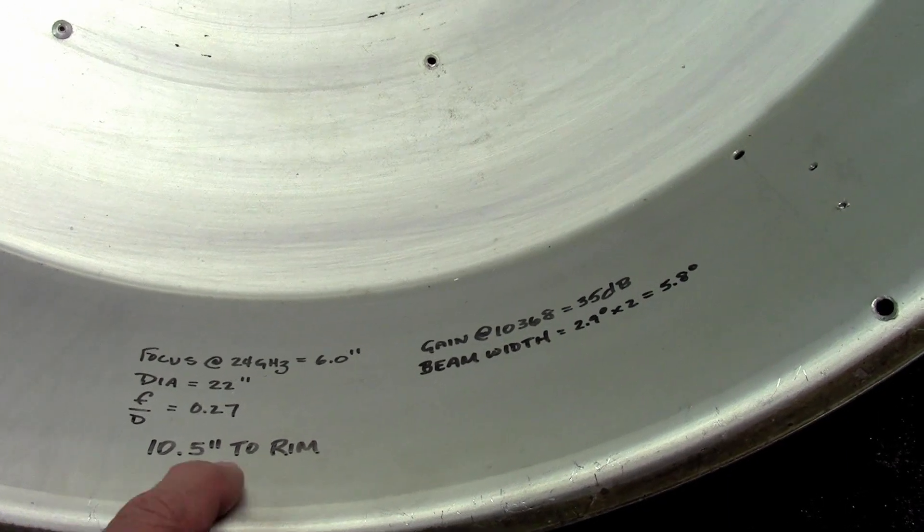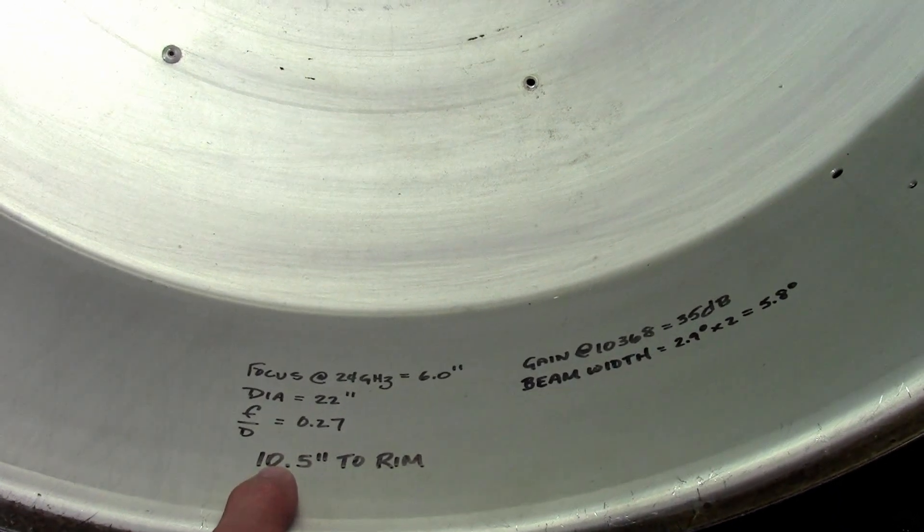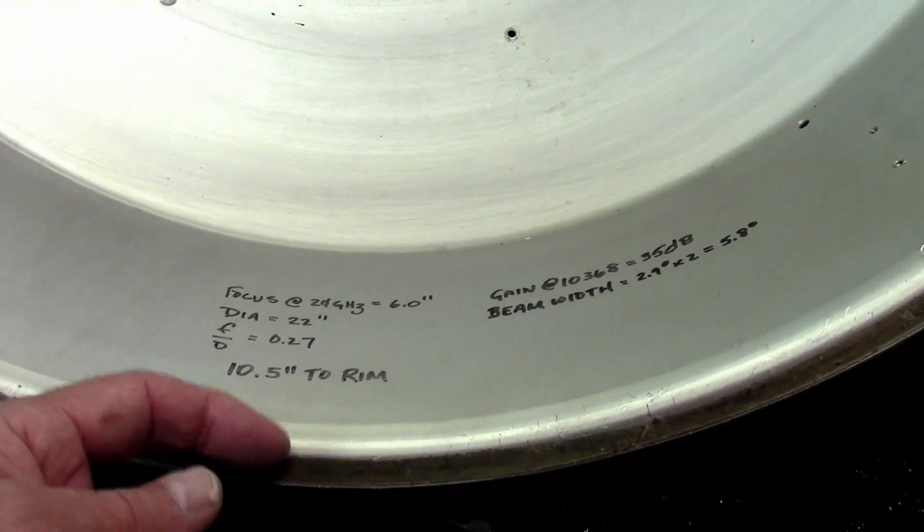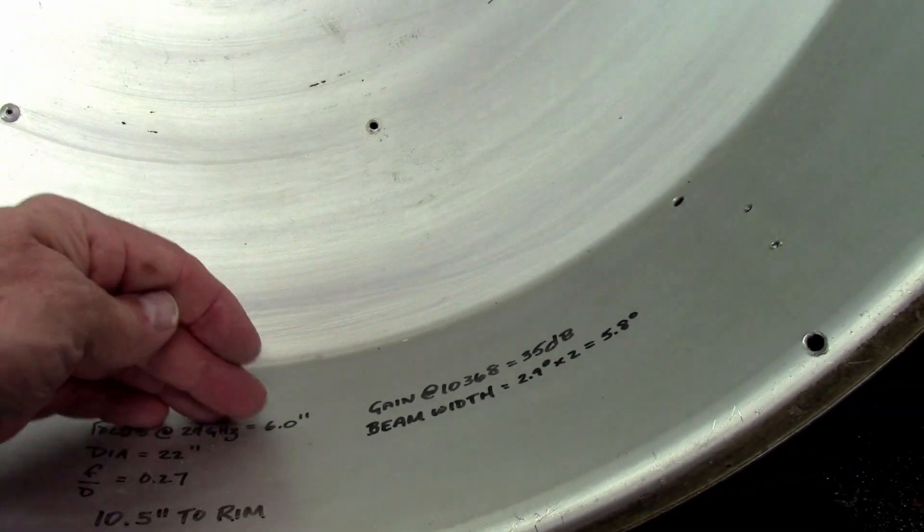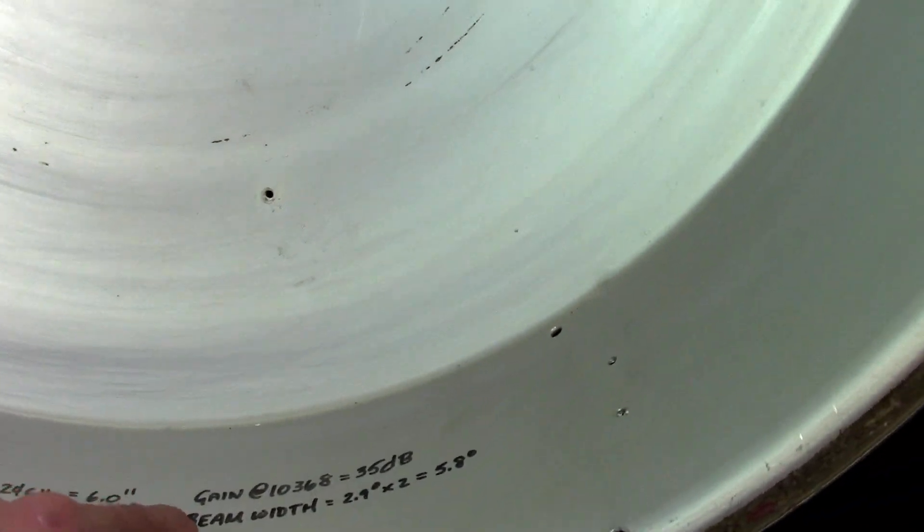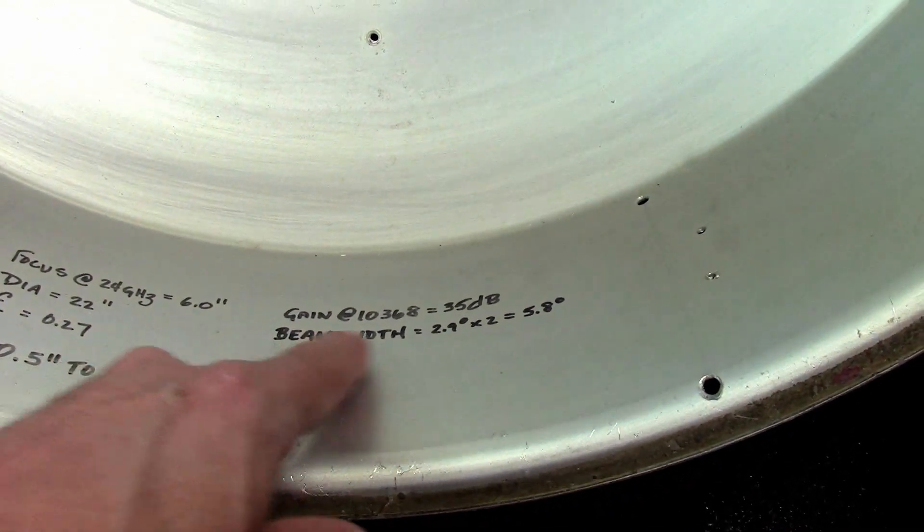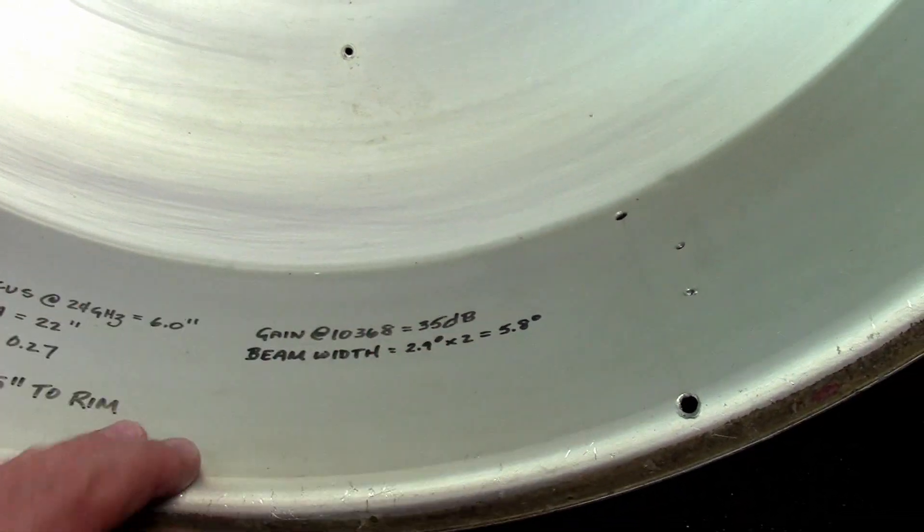It's 10.5 inches from the bottom of the dish to the border here. But like I said, I'm going to remove a chunk of it. The gain of the dish at 10.368 GHz is supposedly 35 dB.